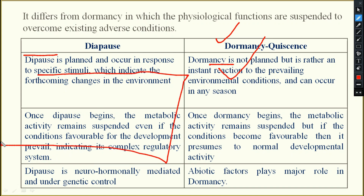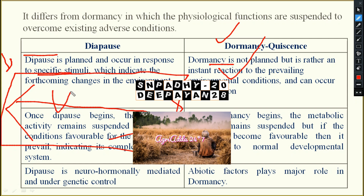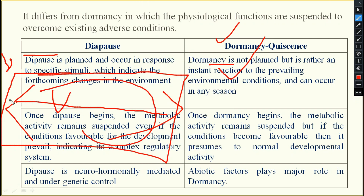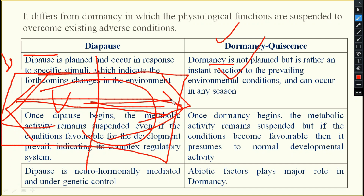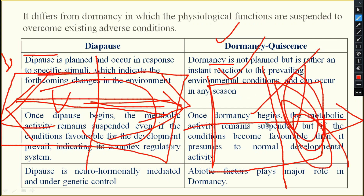For example, if winter lasts two months, the insect undergoes diapause for two months. In diapause, even if winter ends after one month, the insect stays in the diapause state and will not resume activity. But in dormancy, if winter ends after one month, the insect immediately resumes its activity — there is no more dormancy.